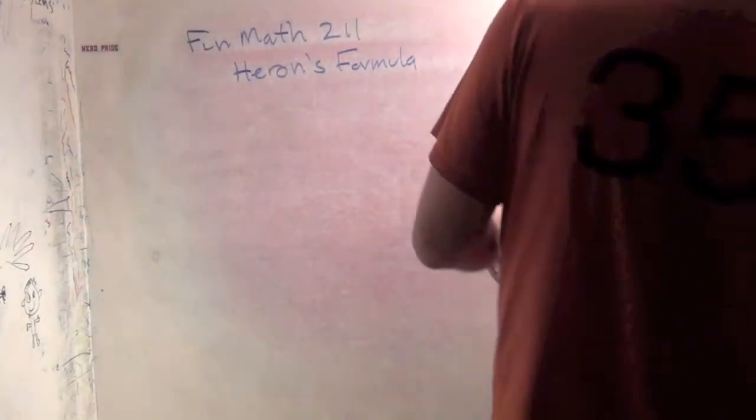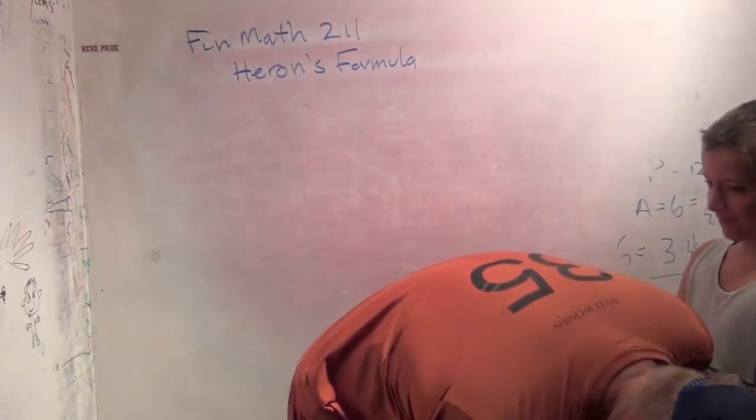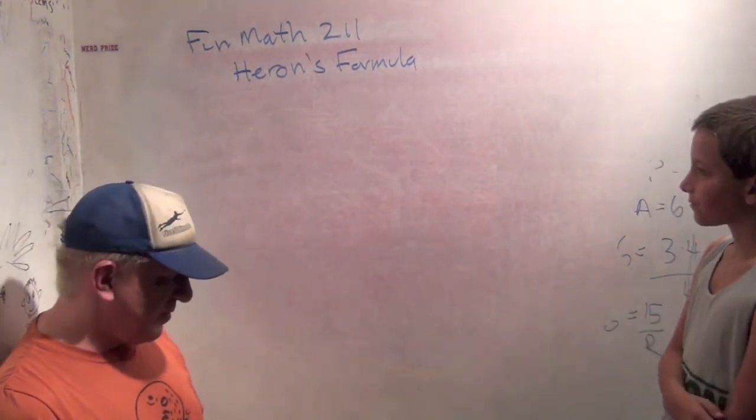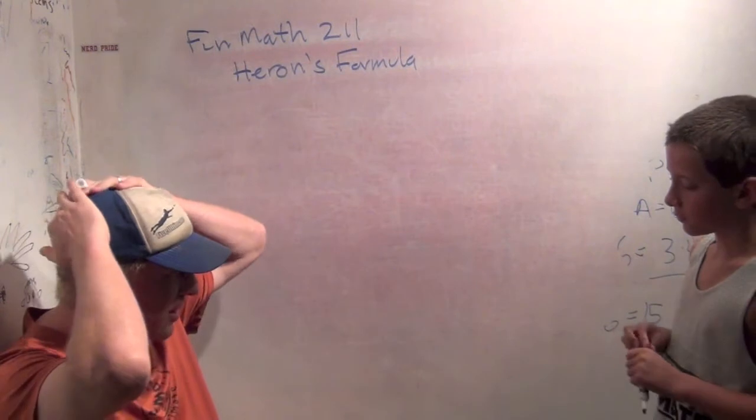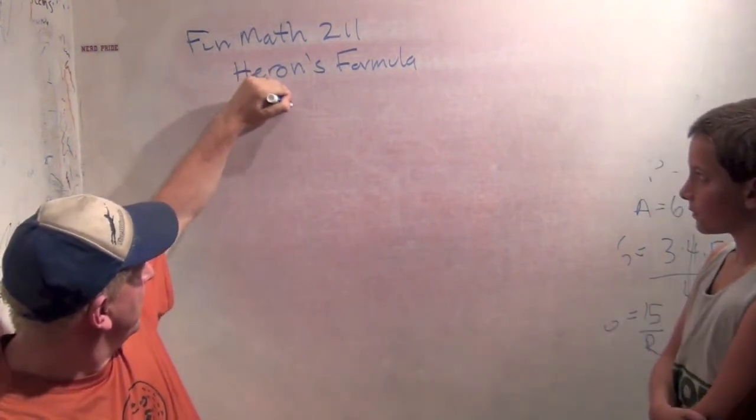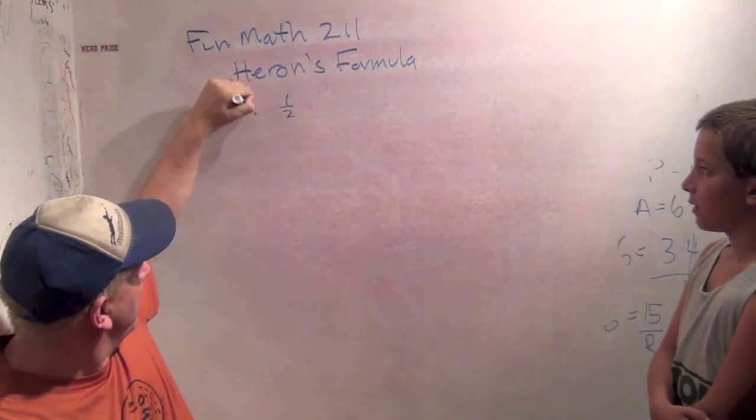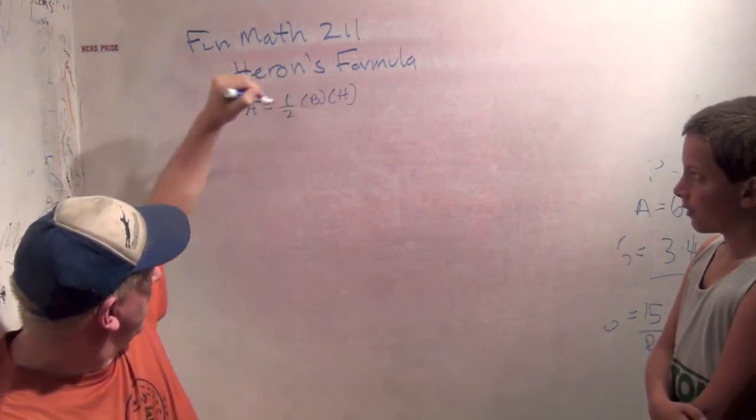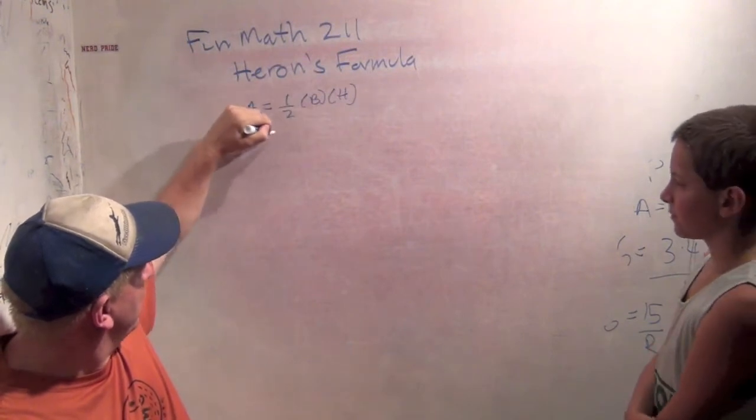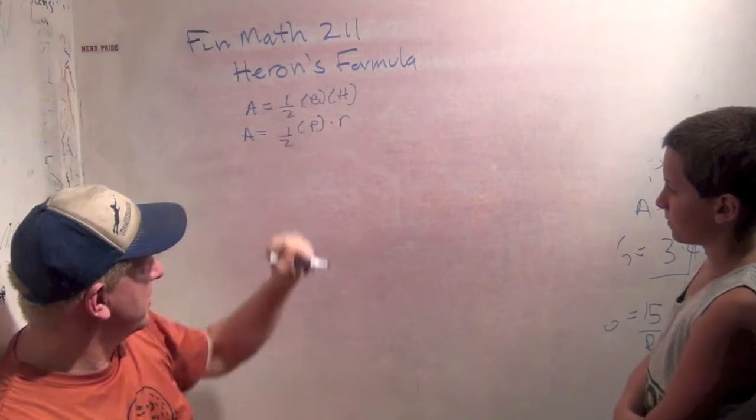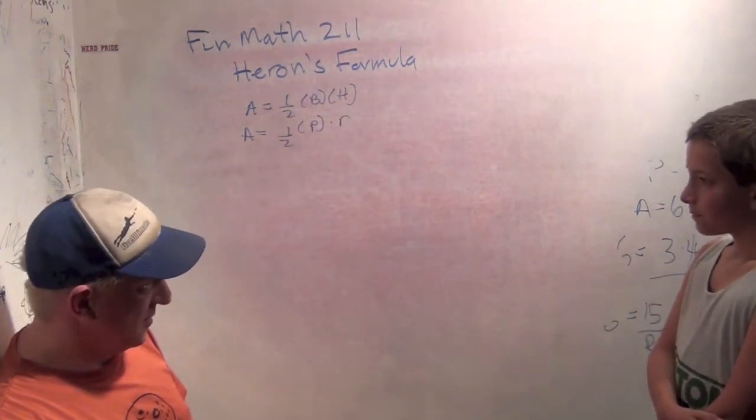Good morning. Welcome to Fun Math number 211. This week, just for fun, we've been talking about different neat triangle formulas. So far we already knew the area is one half base times height. Then we learned the area is also one half the perimeter times the radius of the inscribed circle, right?